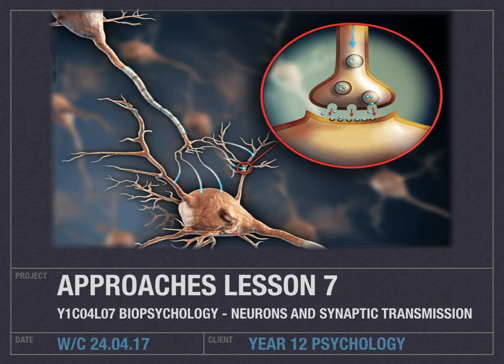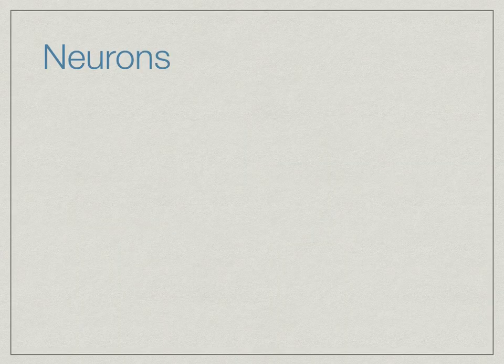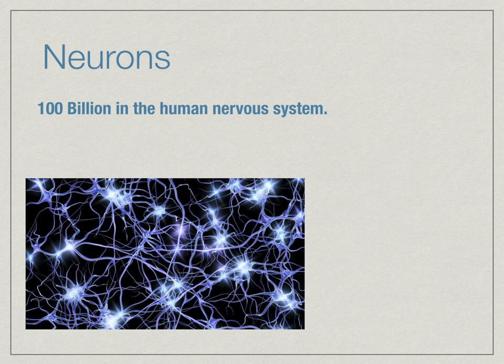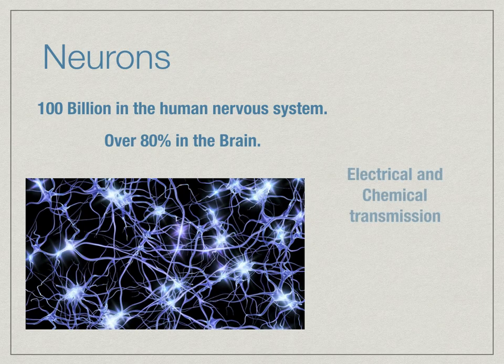Welcome to your second biopsychology lesson, which is all about neurons and synaptic transmission. Neurons are the basic building blocks of the nervous system. They are nerve cells that process and transmit messages. You've got over 100 billion neurons in the human nervous system, and over 80% of those are in the brain. They transmit messages through electrical and chemical transmission.